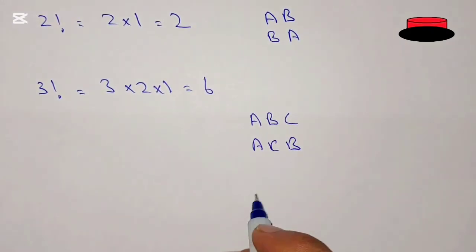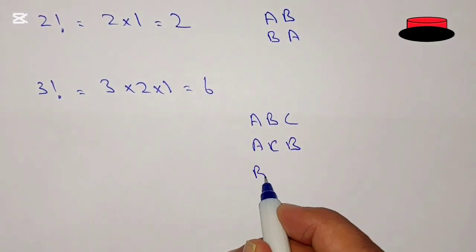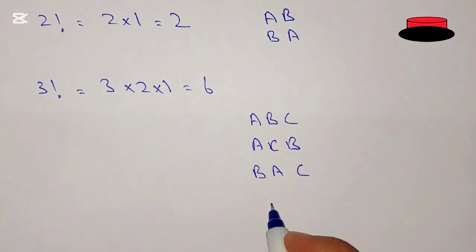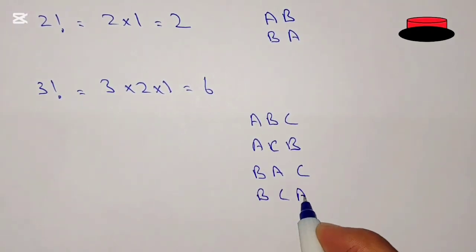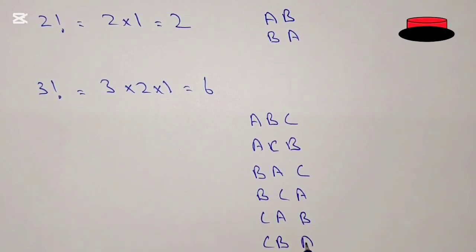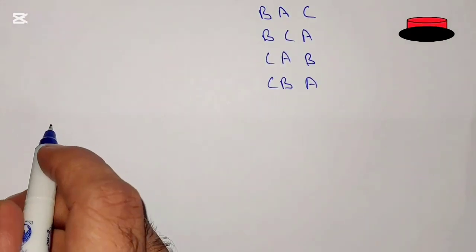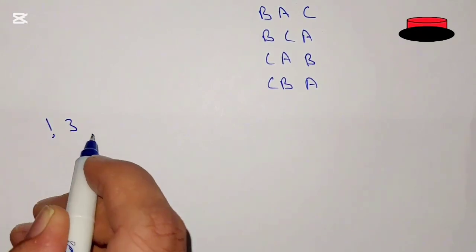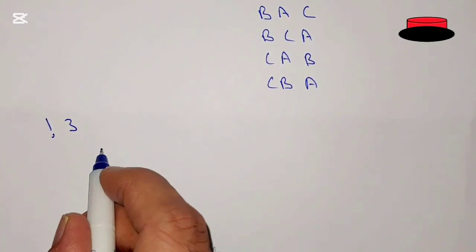Those 6 permutations are: a,b,c — a,c,b — b,a,c — b,c,a — c,a,b — and c,b,a. So these are total 6, that's why the answer is 6.